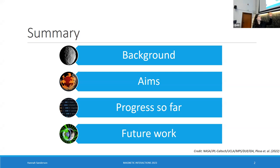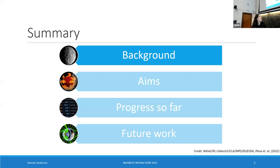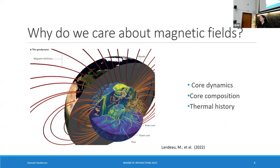I'm going to give you some background, my aims, and then progress so far — this is very much a work in progress. Why do we care about magnetic fields? Asteroid magnetic fields are really interesting because they give us a way to look inside asteroids and other planets in general, to understand what's happening inside planetary cores, which is not a place we can ever go because it's way too far away.